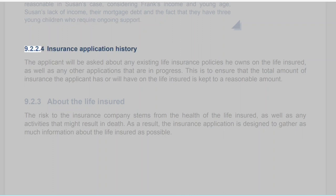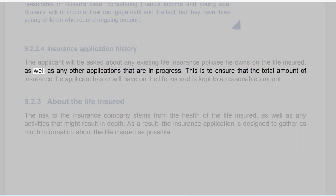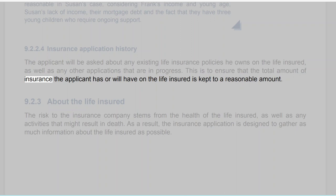Section 9.2.2.4: Insurance Application History. The applicant will be asked about any existing life insurance policies he owns on the life insured, as well as any other applications that are in progress. This is to ensure that the total amount of insurance the applicant has or will have on the life insured is kept to a reasonable amount.